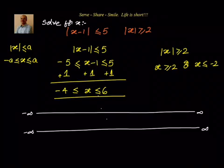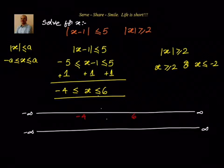For the first condition, the values are between minus 4 less than or equal to x less than or equal to 6. On the number line, let us mark minus 4 and 6. Minus 4 is included and 6 is also included, so all the values between them is what we want.